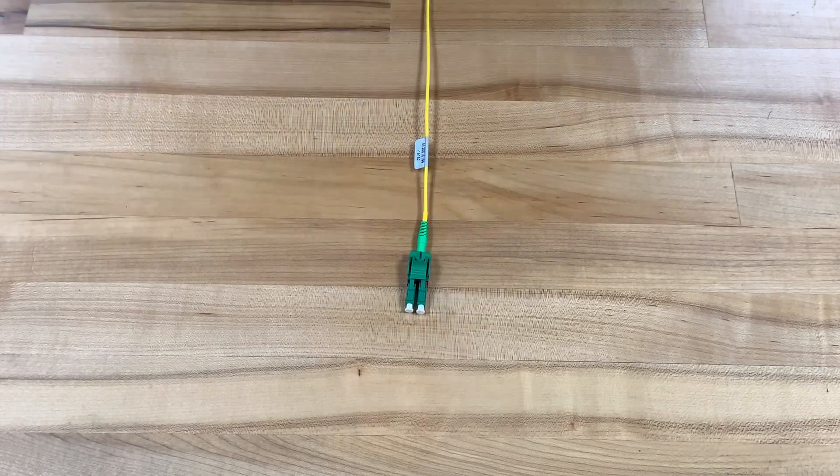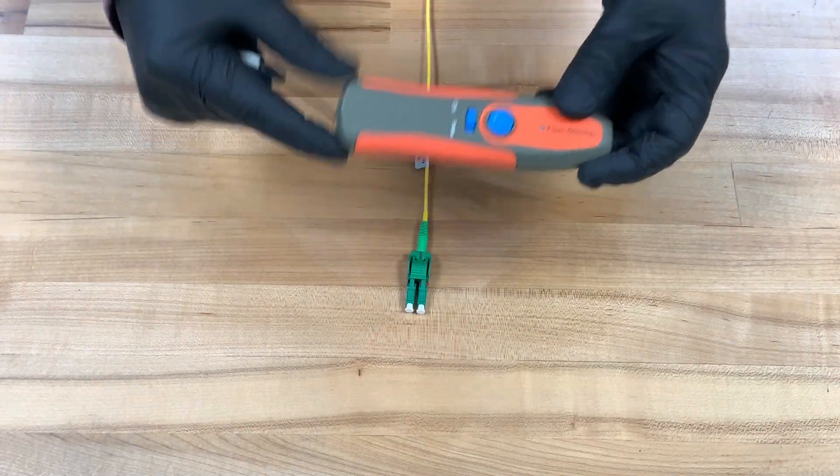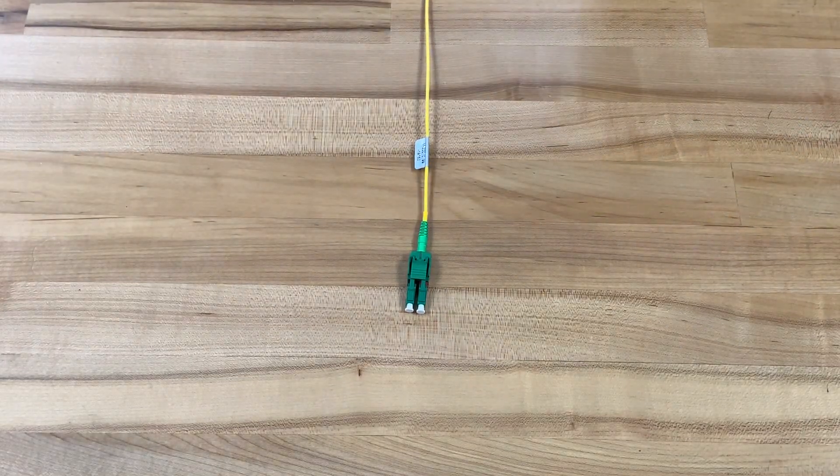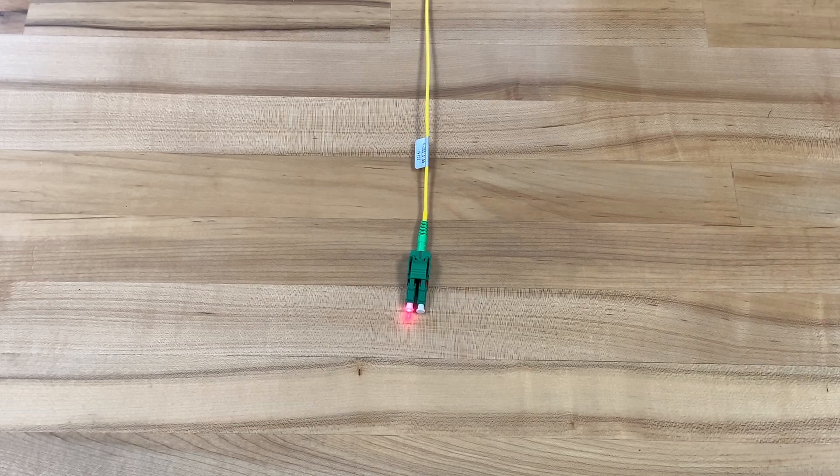First thing that you want to do is verify the polarity. Using something like Sanko's smart checker or a similar VFL, you could shine red light into the far end of the cable assembly. If the light's coming out of the wrong end, that's when it's time to change the polarity.